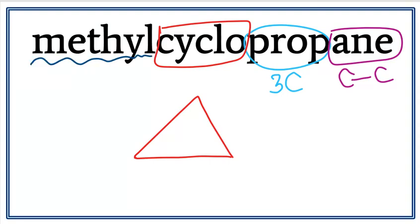But we don't see a number here to tell us where this methyl is attached. When there is no number, we just assume that it is on the first carbon, and we really don't need to number this cyclopropane.